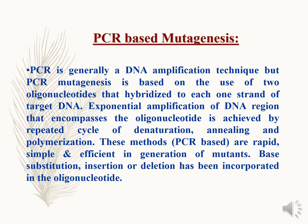The fourth method is PCR-based mutagenesis. PCR mutagenesis is based on the use of two oligonucleotides that hybridize to each strand of target DNA. Exponential amplification of the DNA region results in oligonucleotides containing the desired mutation. Through repeated cycles of denaturation, annealing, and polymerization, this method results in simple and efficient generation of mutants. This method is very rapid; base substitution, insertion, and deletion can all be incorporated.